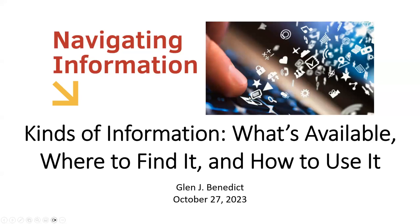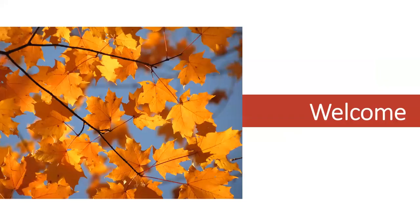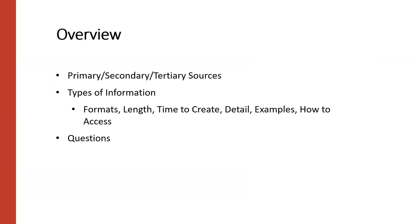Hello. My name is Glenn Benedict. I'm a librarian here at UDC. Today we're going to talk about different types of information, where you can get it, how you would use it. So let us go forward. I want to start off by talking about primary, secondary, and tertiary sources — some terms you may have heard your professors use before. These are going to tie into the majority of what we're going to be talking about, which is types of information.